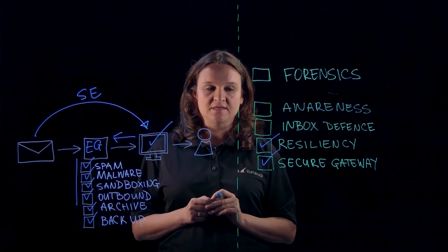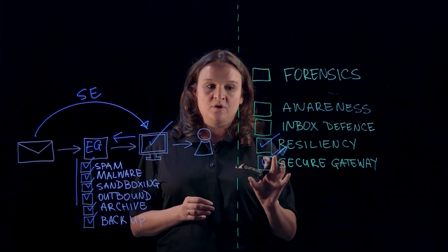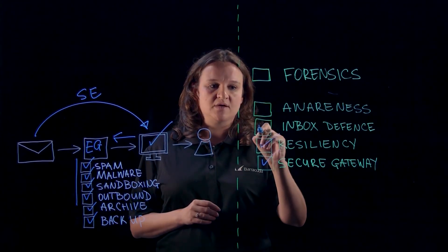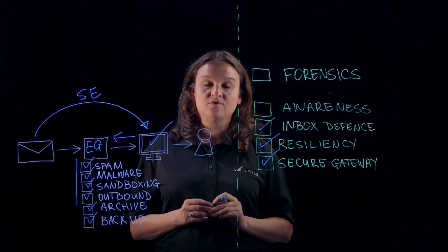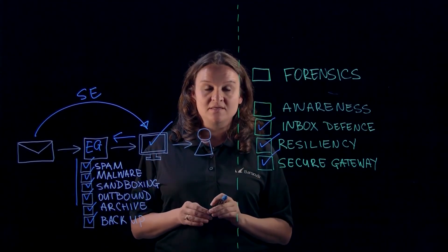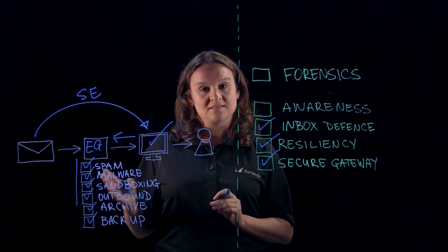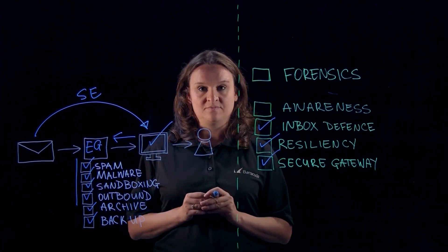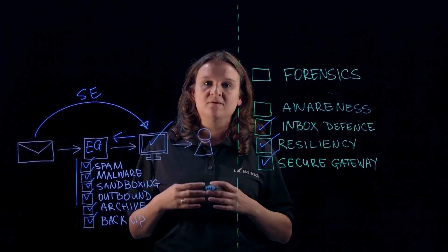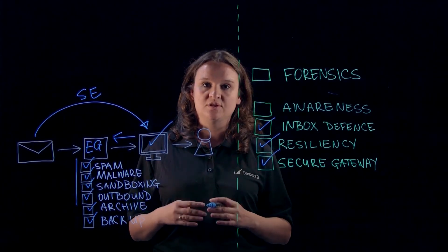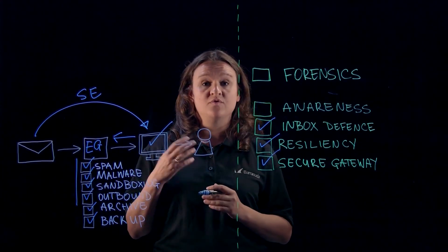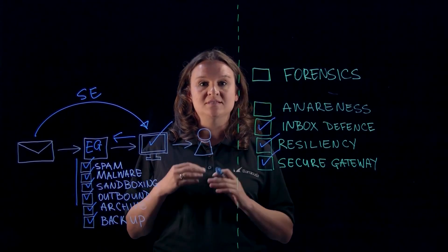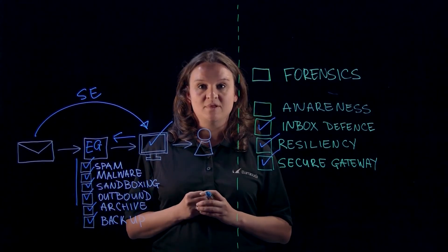But what about all those spear phishing attacks? You need to look beyond securing your gateway — you need to secure your inbox through inbox defense. You need a technology that integrates directly with your inbox and has visibility into not only incoming email, but also historical and internal communication, so it can build a sense of what normal communication looks like within your organization. Then if any anomalous email or activity happens, you can detect it and analyze it for malicious intent.